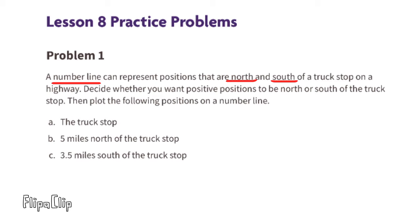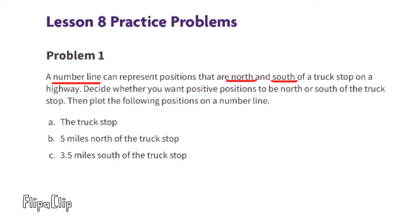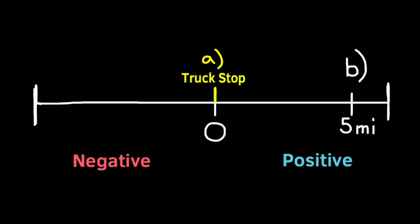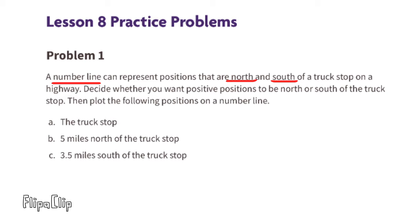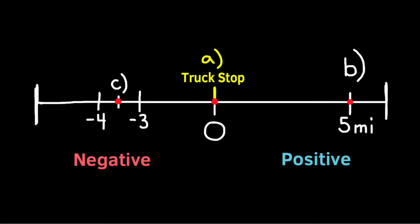Part a: The truck stop is placed at zero on the number line. Part b: Five miles north of the truck stop — let's put north as positive, so five miles would be located to the right of the truck stop. Part c: 3.5 miles south of the truck stop — south would be negative, located to the left of the truck stop.